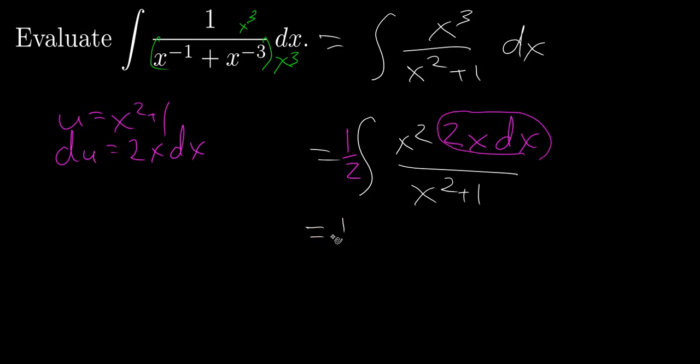So I can rewrite my integral now as 1 half the integral of x squared du over u. I'm not quite done because I still have something involving x.